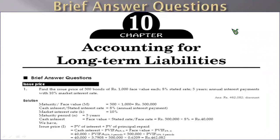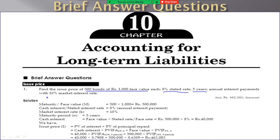I am going to talk about BBS First Year, Chapter 10, Accounting for Long-Term Liabilities — brief answer question solutions. Question number one: find the issue price of 500 bonds, Rs.1000 face value, 8% stated rate, 5 years, annual interest payment, with 10% market interest rate. The market interest rate is 10%, but the actual payable interest rate is 8%, so these are discount bonds payable.